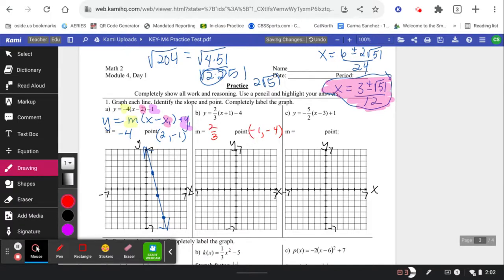So back 1 and down 4 is my starting point. Back 1, down 1, 2, 3, 4. And from there I count a slope of up 2, over 3, up 2, over 3, and down 2, back 3. How did you do?